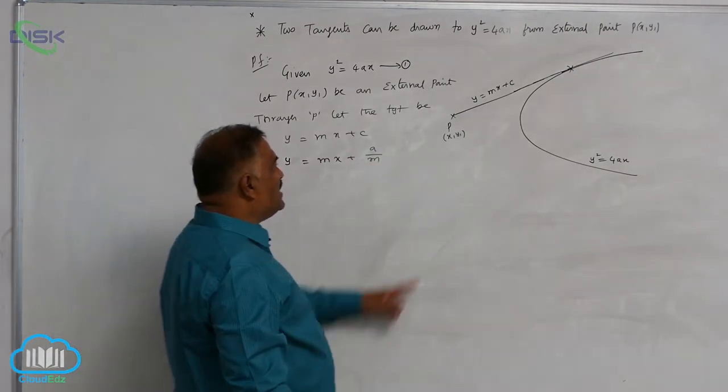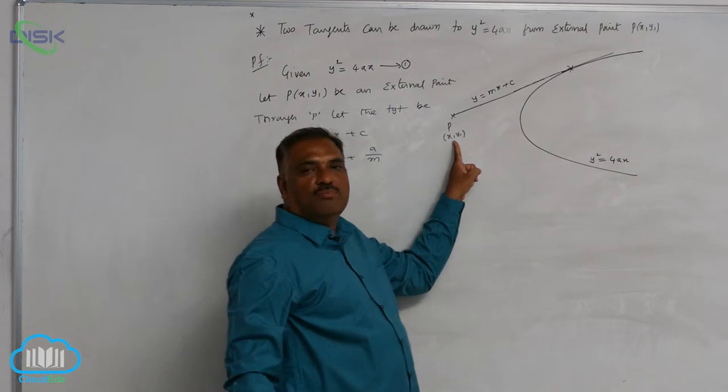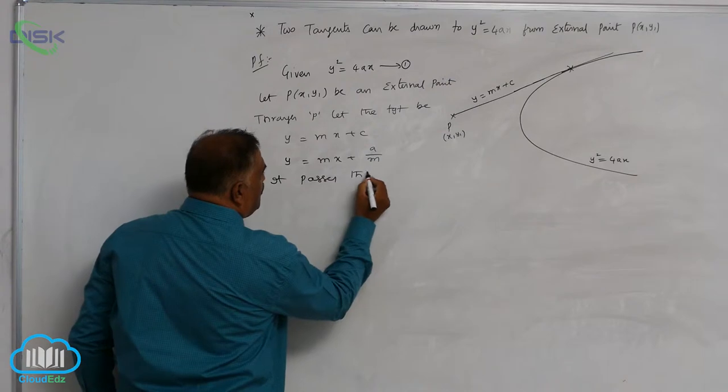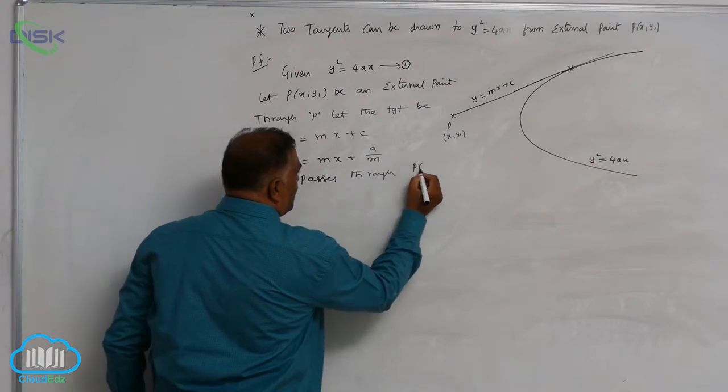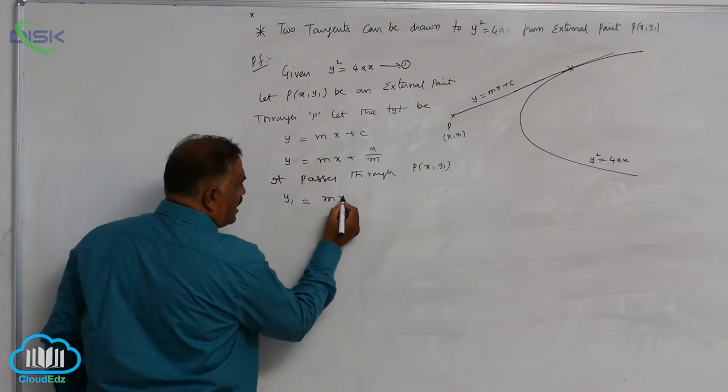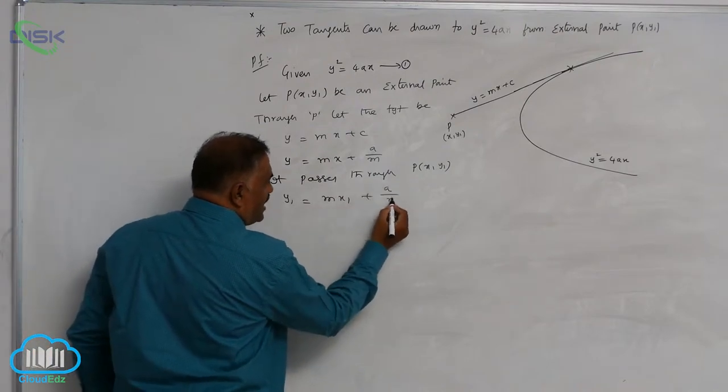But this tangent line passes through P at x1, y1. So substitute: y1 is equal to mx1 plus a by m.